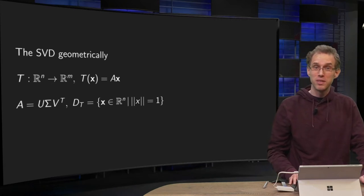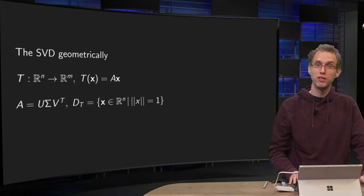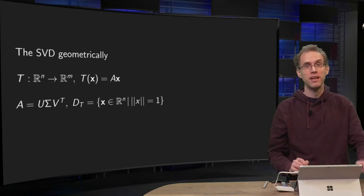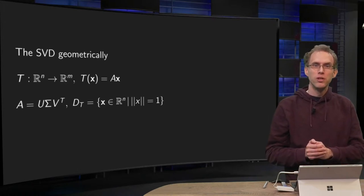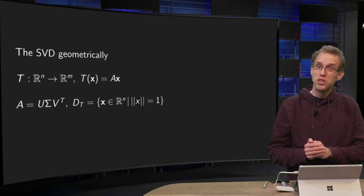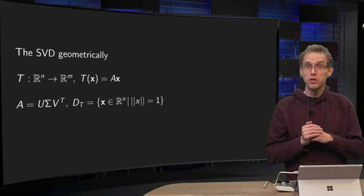You know that any m times n matrix A can be associated to a linear transformation from R^n to R^m. If your matrix is nice and square and diagonalizable, you know how this matrix looks geometrically. In essence, the eigenvalues tell you what is going on.